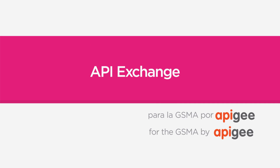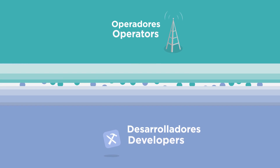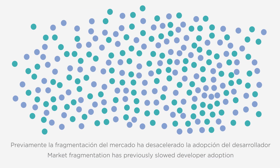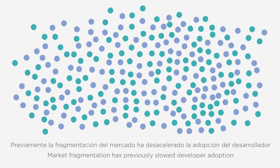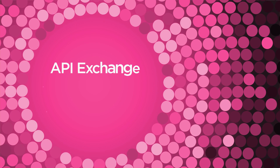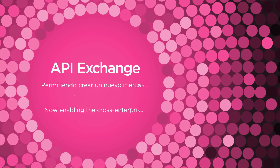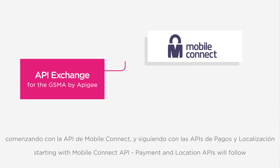Behind the scenes, it's the API Exchange which brings developers and operators together to interoperate. Previously, market fragmentation has slowed developer adoption. Today, the API Exchange will enable the cross-enterprise API app economy to thrive, starting with the MobileConnect API.